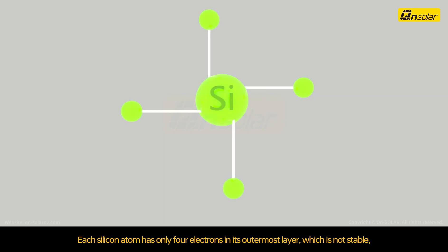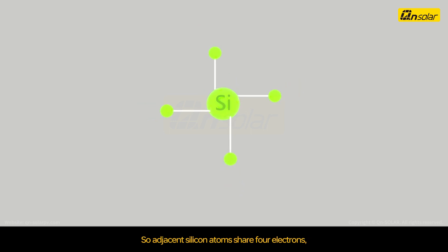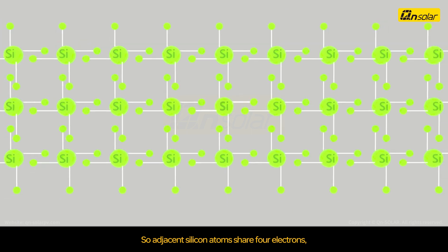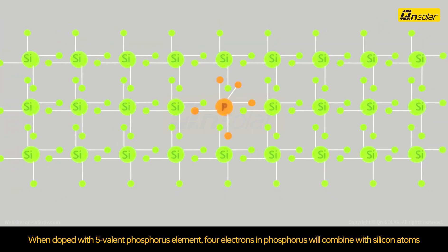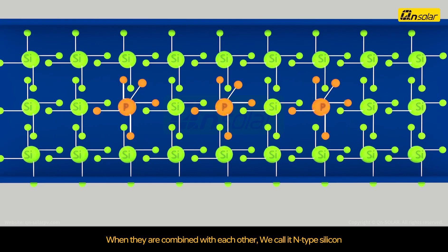Each silicon atom has only four electrons in its outermost layer, which is not stable. So adjacent silicon atoms share four electrons. When doped with five-valent phosphorous elements, four electrons in phosphorous will combine with silicon atoms. When they are combined with each other, we call it n-type silicon.